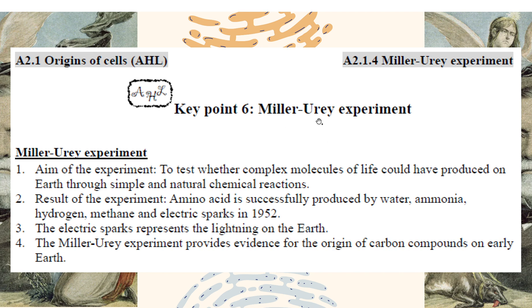Miller-Urey has a great experiment, but it's about another thing — not spontaneous generation of life. It's about the complex molecules. They tested whether the complex molecules of life can be produced by simple molecules or by simple electrical chemical reactions — synthesize some complex molecules, but not a cell, just the molecules. They did it. Amino acid is produced from water, ammonia, hydrogen, methane, and an electric spark in 1952. The electric spark represented the lightning of the early Earth. So it showed that in the early time, by lightning on the Earth, amino acids can be produced from simple molecules. So the Miller-Urey experiment provides evidence for the origin of carbon compounds.